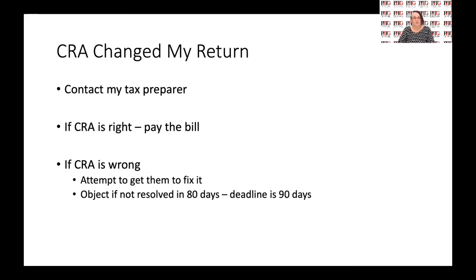If CRA is right, there's nothing you have to do but pay the bill. But what if CRA is wrong? They may have included income that isn't yours, or income that you reported in a different place. Then you need to try to fix this. Your best bet is to contact CRA — usually early in the morning is best if you're going to call — and see if you can get it resolved that way.